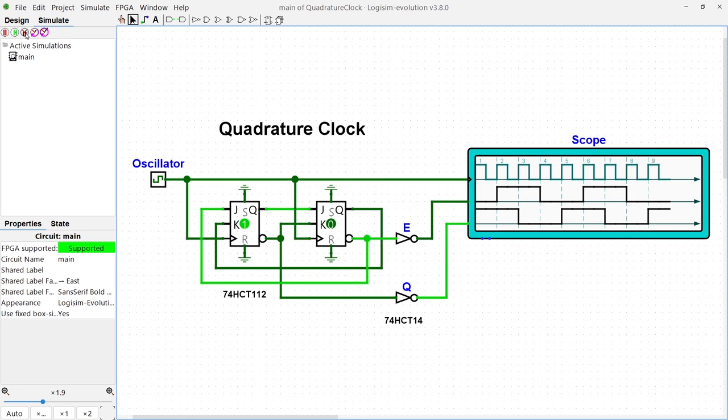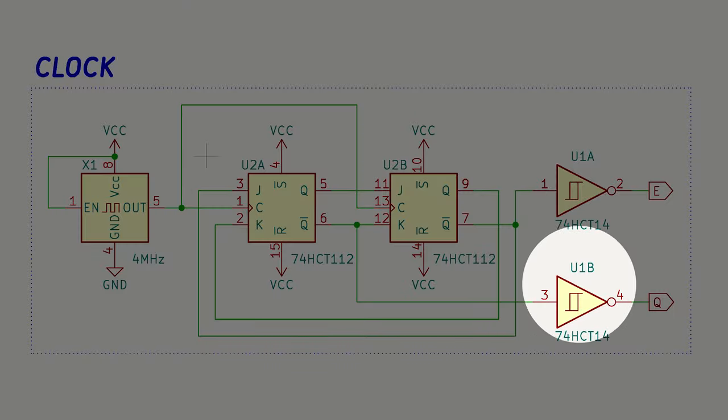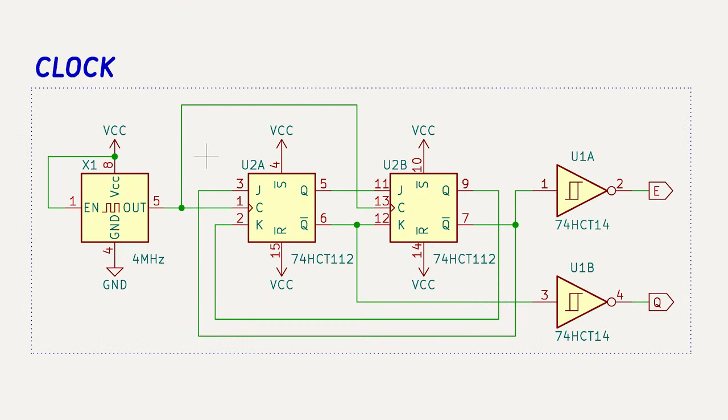The signals are then cleaned up by two Schmidt trigger inverters to provide the final clock signals, represented as E and Q. In essence, the resulting clock frequency for the CPU is 1MHz.